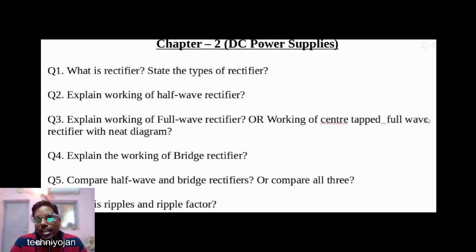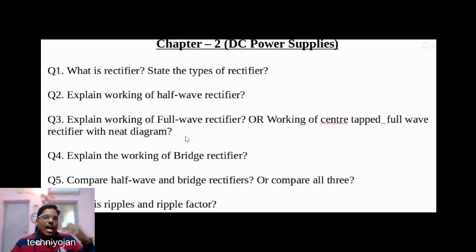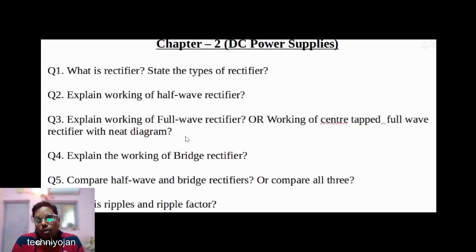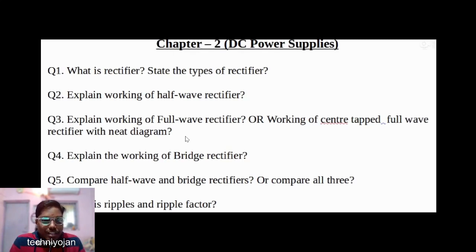Explain the working of a full wave rectifier, also called a center-tapped full wave rectifier — alternate naming applies here too. For the bridge rectifier, note the number of diodes: two diodes for half wave, four diodes for full wave or bridge. Memorize and label the diodes carefully. If you miss labeling even one diode, the diagram and concept go completely wrong and you will lose marks.